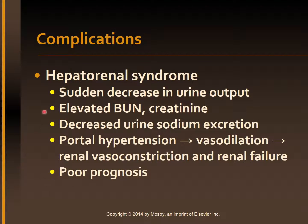Hepatorenal syndrome indicates very poor prognosis and is often the cause of death in these patients. With portal hypertension, ascites, and splenomegaly, there is generalized vasodilation and decreased arterial blood volume, which triggers renal vasoconstriction resulting in renal failure. Hepatorenal syndrome is manifested by a sudden decrease in urinary flow or oliguria, elevated BUN and creatinine levels, and abnormally decreased urine sodium excretion.